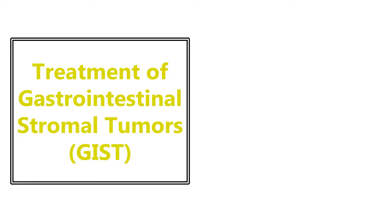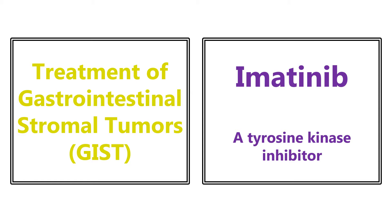Treatment of gastrointestinal stromal tumors, GIST — treatment here is going to be imatinib. This is a tyrosine kinase inhibitor, and it is also used to treat Philadelphia chromosome positive CML. So imatinib is used for treatment of gastrointestinal stromal tumors as well as Philadelphia chromosome positive CML.